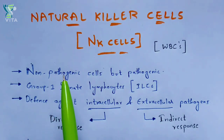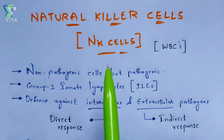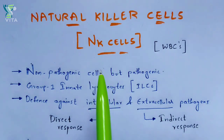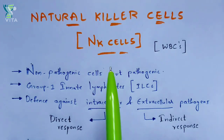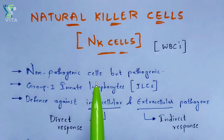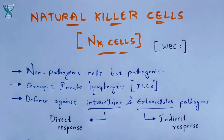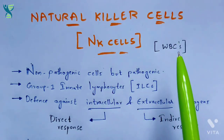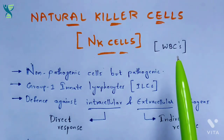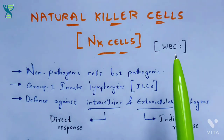Natural killer cells are non-pathogenic in the sense that they will not cause any harm to your own body tissues, but they can cause damage to cells which enter from the external environment that cause infection to your body. By this you can understand that these natural killer cells are considered as white blood cells, which play a major and vital role in performing the defense mechanism to prevent your body from harmful infections.